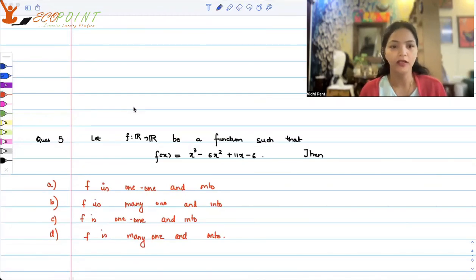Hi guys, let's look at the next question. Let f be from R to R and it's a function which is given by f(x) equals x cube minus 6x square plus 11x minus 6.